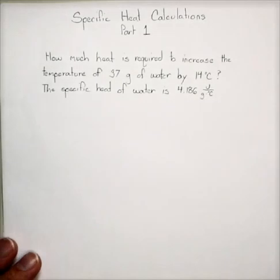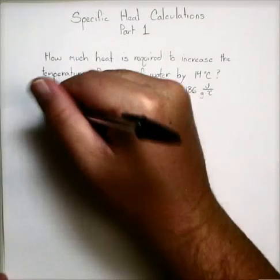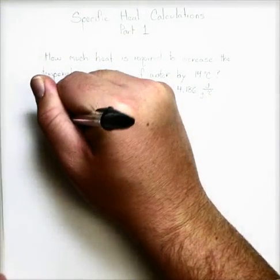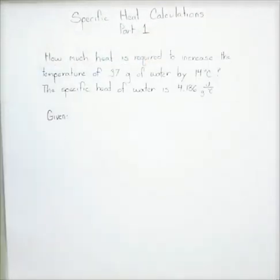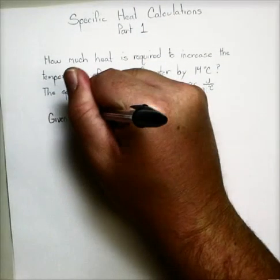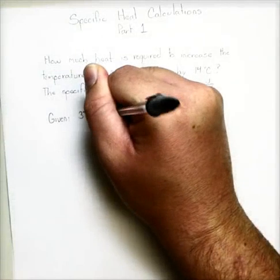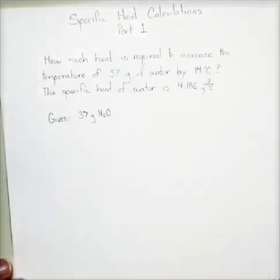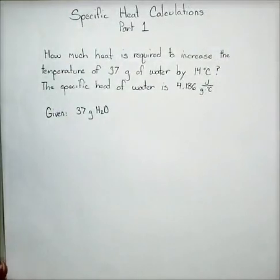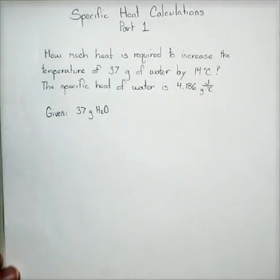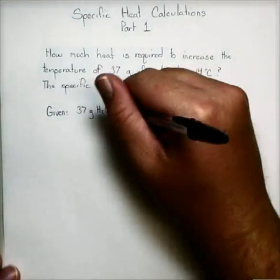So now problem solving. Just like we always do, we start by writing down what they give us. So what do they give us? They tell us we have 37 grams of water. I'm going to use H2O for water. And the next thing I want you to do after this is I want you to tell me what that quantity is. So 37 grams, that's a mass.